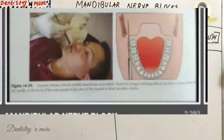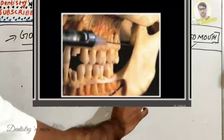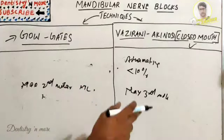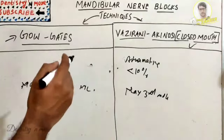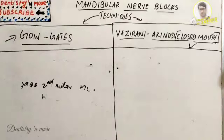The area of insertion is the soft tissue overlying the medial border of the mandibular ramus adjacent to the maxillary tuberosity, at the height of the mucogingival junction adjacent to the maxillary third molar. The target area is the soft tissue on the medial border of the ramus in the region of the inferior alveolar, lingual, and mylohyoid nerves.